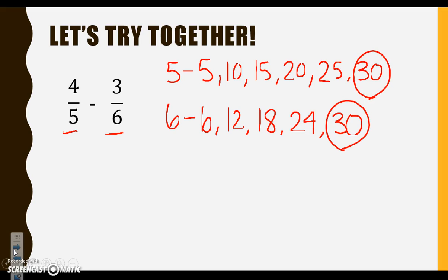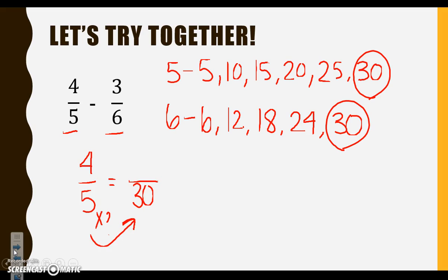So we know we are trying to change 4 fifths into a fraction with a denominator of 30. We have to ask ourselves, 5 times what gives me 30? The basic fact is 6, or we can count: 1, 2, 3, 4, 5, 6. Whatever I do to the bottom, I must do to the top, so we're going to multiply 4 times 6. When I multiply 4 times 6, I get 24.